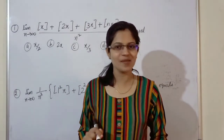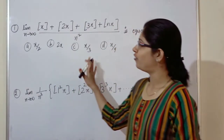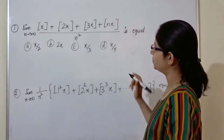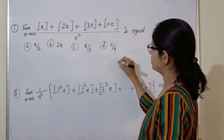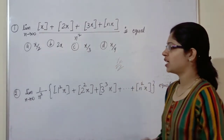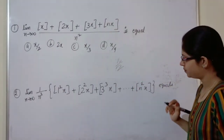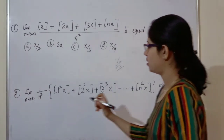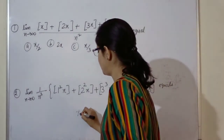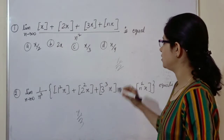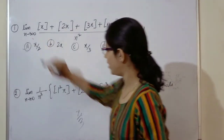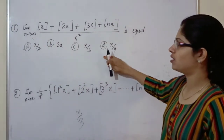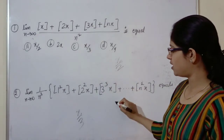These are my two questions. First question — its answer is x by 2. Second question — its answer is x by 3. Option A is correct for the first, and if there were these options, then for this, option C is correct.